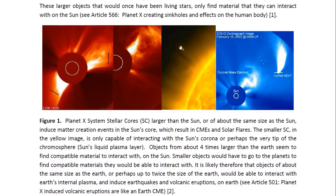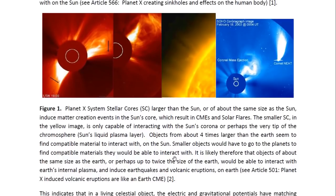The smaller stellar core, seen in the yellow image, is only capable of interacting with the Sun's corona. That's why it's just sitting there in the Sun's corona, interacting either with the corona itself or possibly with the upper layer of the chromosphere. This object is much smaller than the Sun, and much smaller than both of the other objects. Objects from about four times larger than the Earth seem to find compatible material to interact with on the Sun.